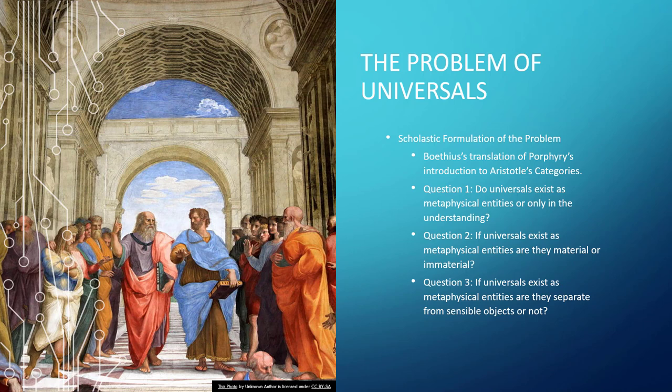Essentially, question three is whether universals are Platonic, existing in Platonic heaven. In the picture of the School of Athens, we see Plato pointing up because that's where he, metaphorically speaking, puts his universals. Or are they not separable from the sensible objects? Put another way, are the universals immanent as opposed to transcendent? And that's Aristotle's view, which is why he's pictured as holding out his hand, saying that they're here.